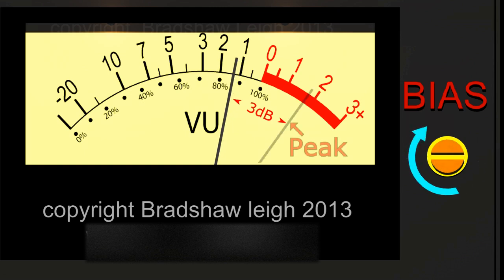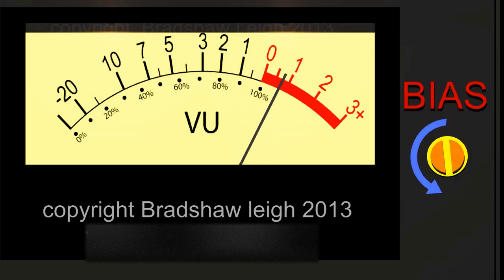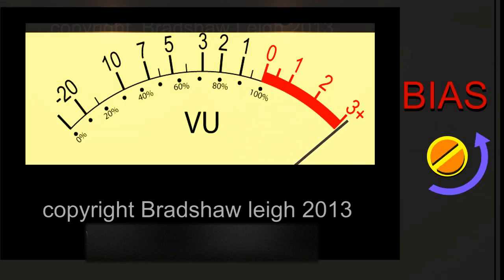You do not turn the bias level down to get the meter to fall. You keep turning it up past the peak until it falls the amount that you want. It doesn't matter where the peak is — what matters is that you increase the bias level until the level falls the required amount, in this case 3 dB. If you can't see the peak because the meter hits the top, bring your signal generator level down and redo the bias.